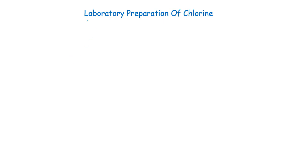Hello and welcome. Today we are going to look at another way we can prepare chlorine in the lab. There are very many methods, but today we are going to use potassium permanganate.